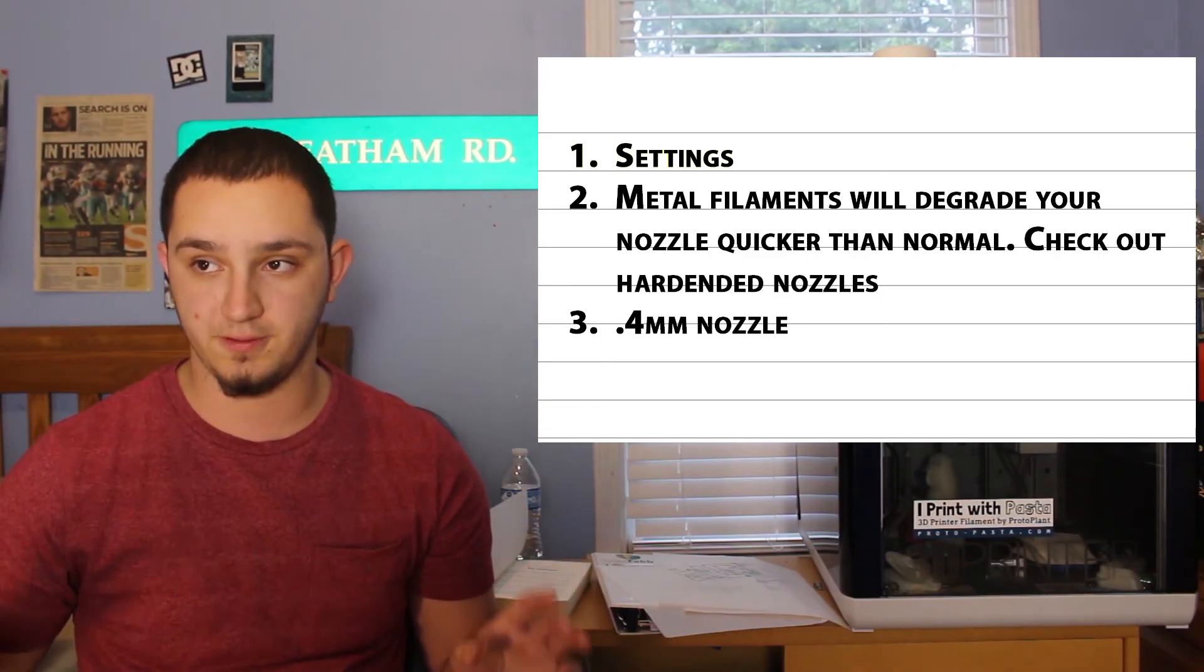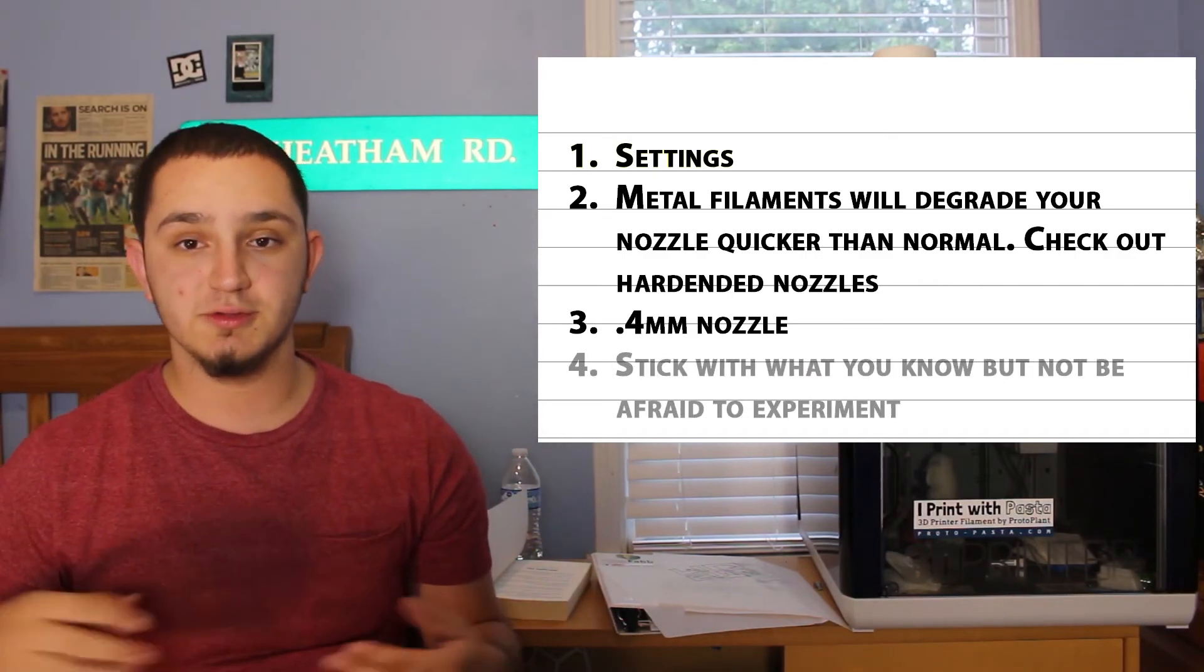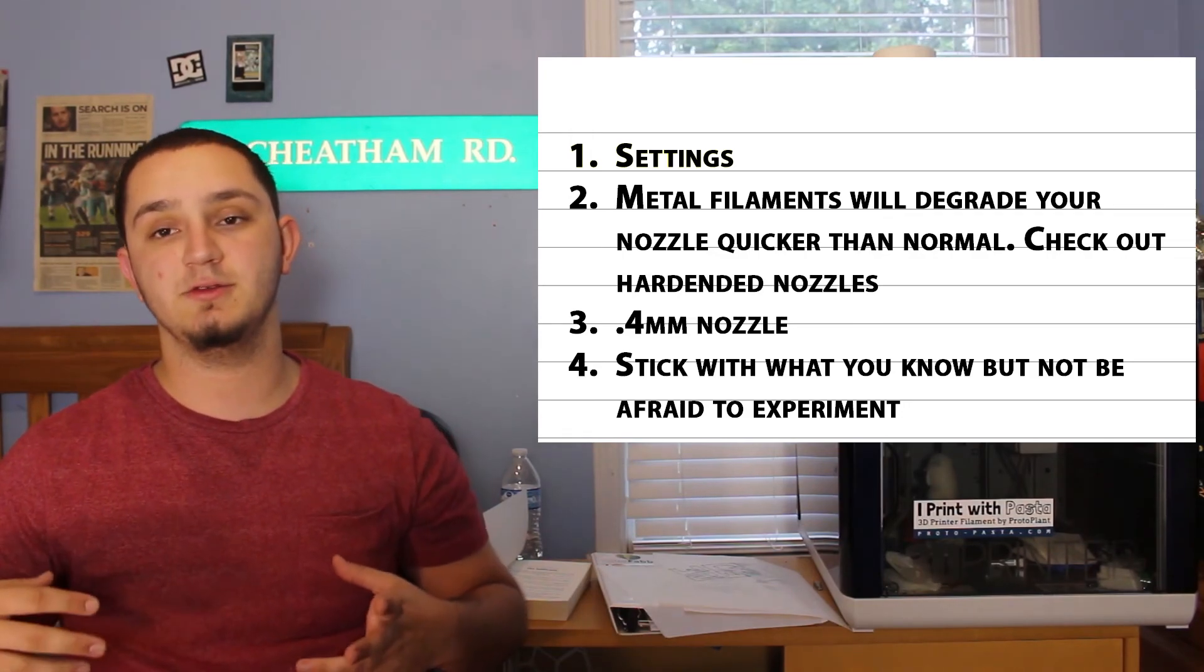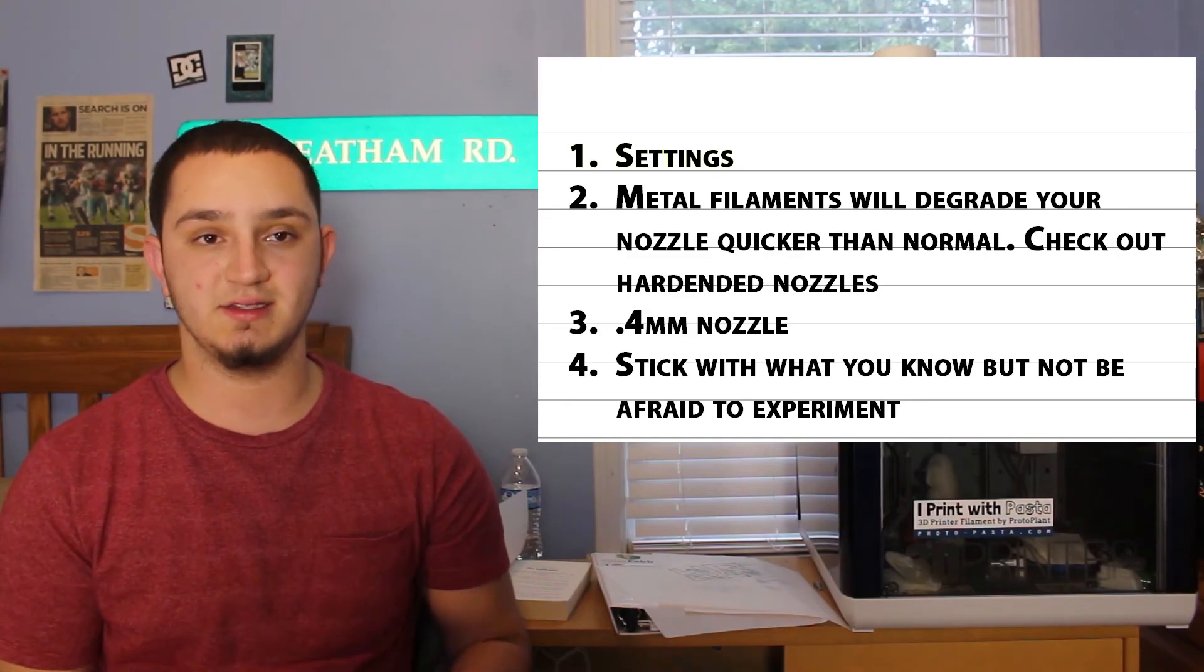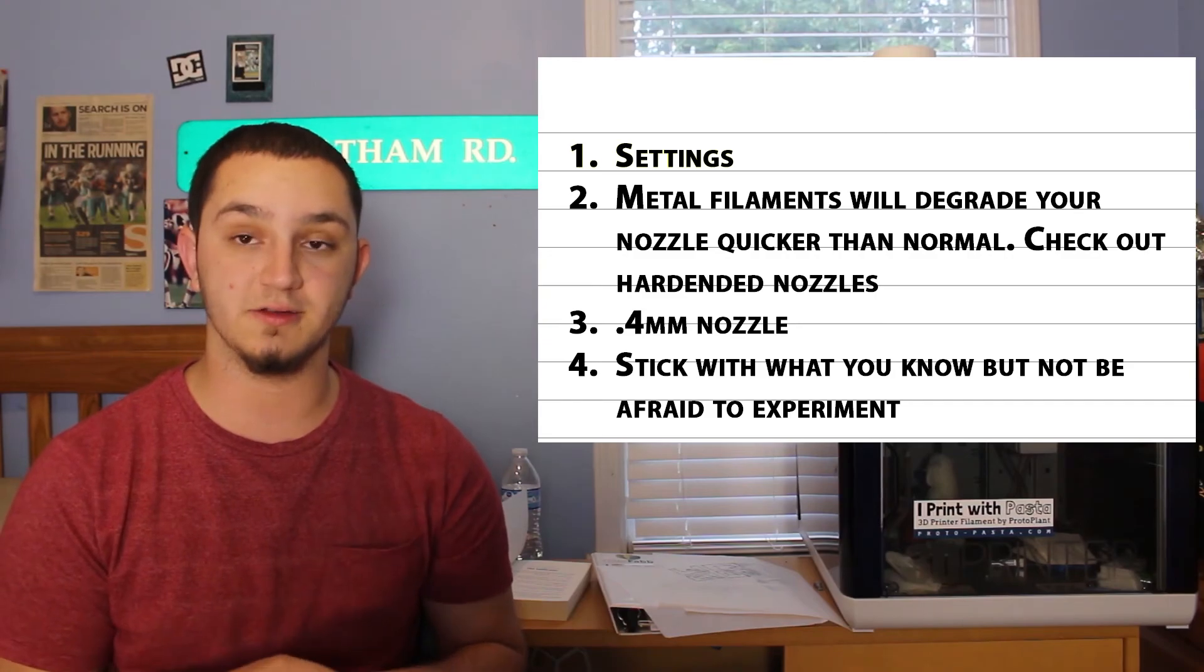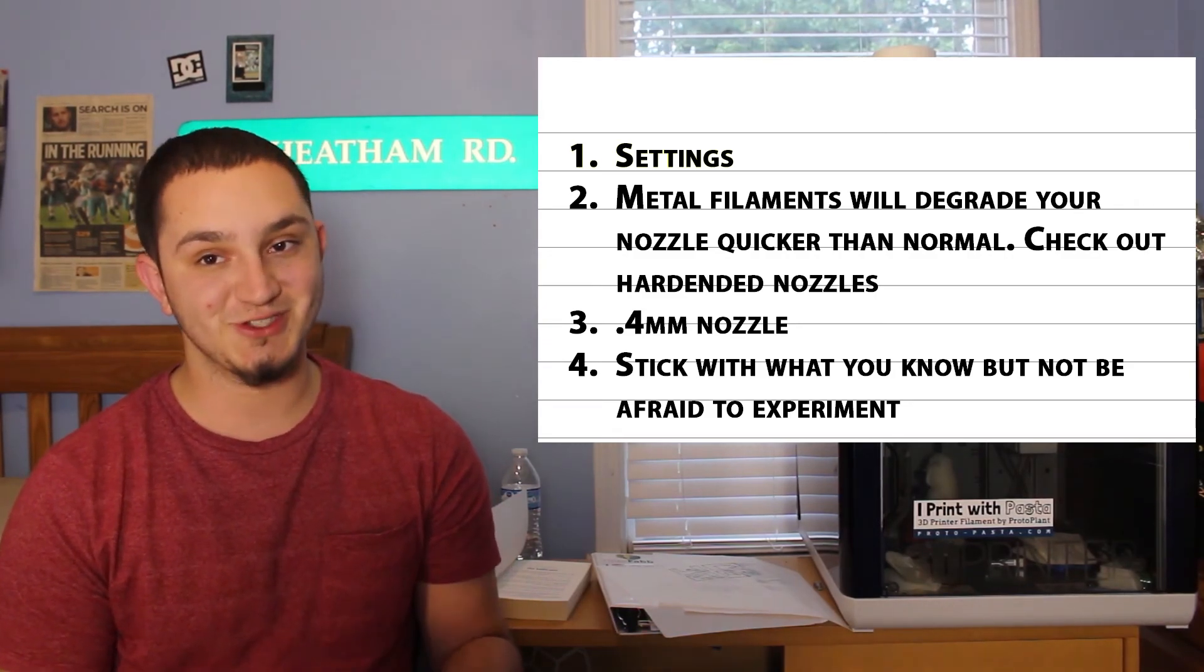Another thing I would recommend is sticking with something around a 0.4 millimeter nozzle. You can go down to 0.3 and you can go up, but preferably for me I found 0.4 works perfect. If you're polishing, do what you know best. If you haven't tried polishing yet, I highly recommend using sandpaper and slowly sanding the lines away.